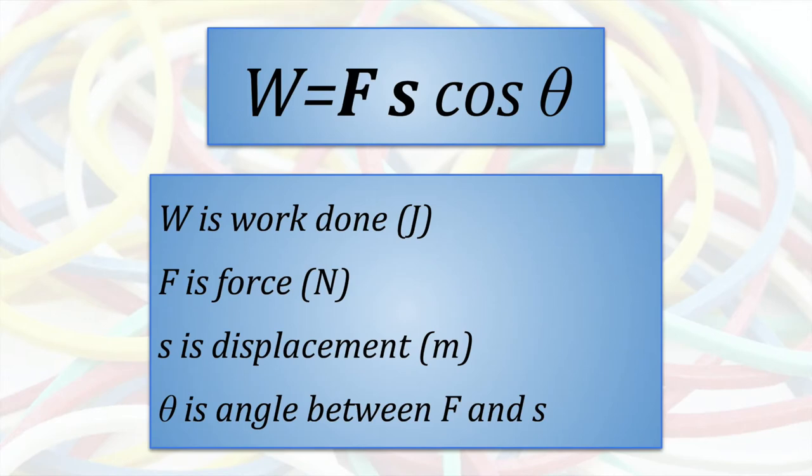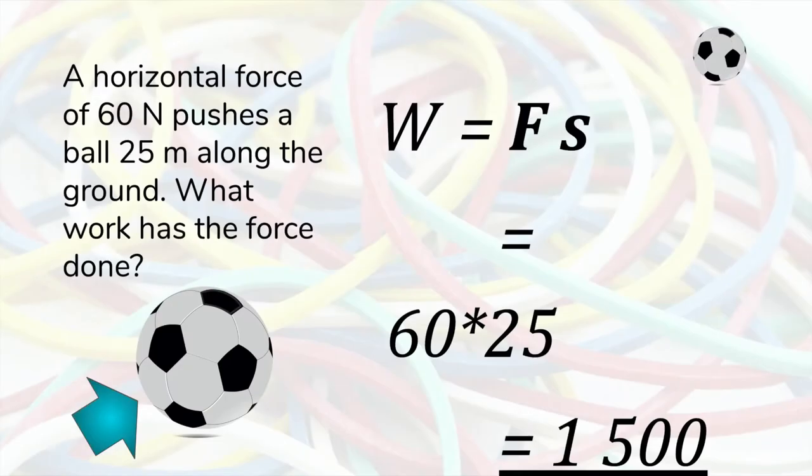This is the formula which was introduced in the video on work done as energy transfer. Here is a simple calculation of work done in which force and displacement are in the same direction, and the work done is found by multiplying force and displacement. The answer is 1500 joules.